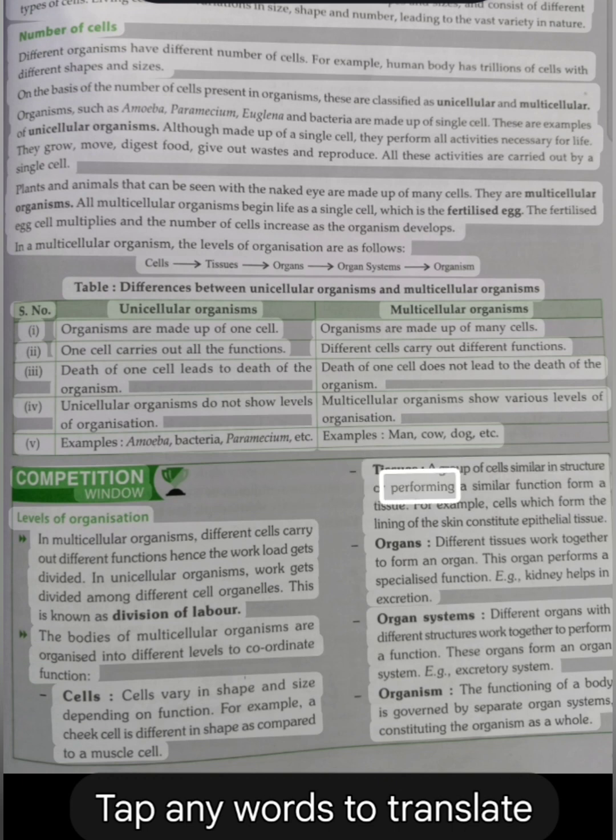Tissues: A group of cells similar in structure or performing a similar function form a tissue. For example, cells which form the lining of the skin constitute epithelial tissue. Organs: Different tissues work together to form an organ. This organ performs a specialized function, e.g., kidney helps in excretion. Organ systems: Different organs with different structures work together to perform a function. These organs form an organ system, e.g., excretory system. Organism: The functioning of a body is governed by separate organ systems, constituting the organism as a whole.